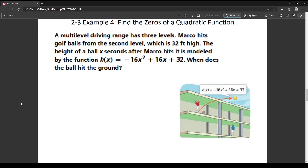So in this problem, there's a multi-level driving range. I didn't even realize there were multi-level driving ranges, but apparently you can shoot golf balls from various heights in a building. Marco is on the second level, which is 32 feet high in the air, and he hits the golf ball, and they went ahead and they created a model of that golf ball with this equation.